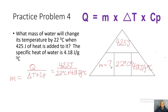Practice problem four asks: what mass of water will change its temperature by 22 degrees Celsius when 425 joules of heat are added to it? We're solving for mass. Change in temperature is 22 degrees Celsius. Q is 425 joules. Specific heat of water is 4.18 joules per grams degrees Celsius.